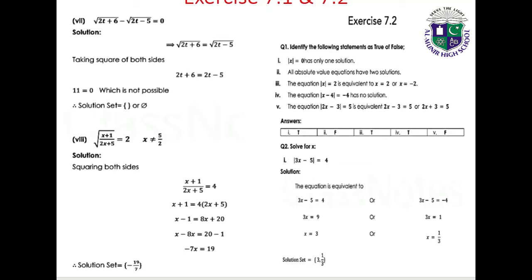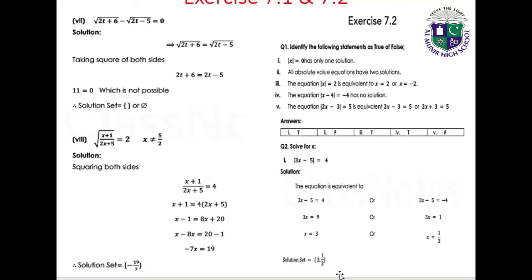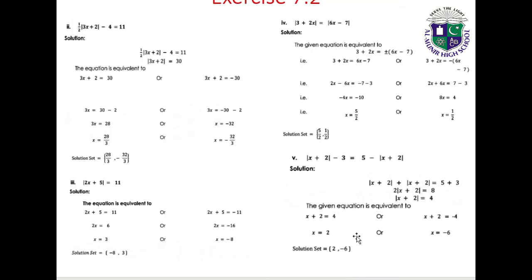Question 2: Solve for x. Part 1: |3x minus 5| equals 4. The equation is equivalent to 3x minus 5 equals 4 or 3x minus 5 equals minus 4. From the first: 3x equals 9, so x equals 3. From the second: 3x equals 1, so x equals 1/3. Solution set: {3, 1/3}.